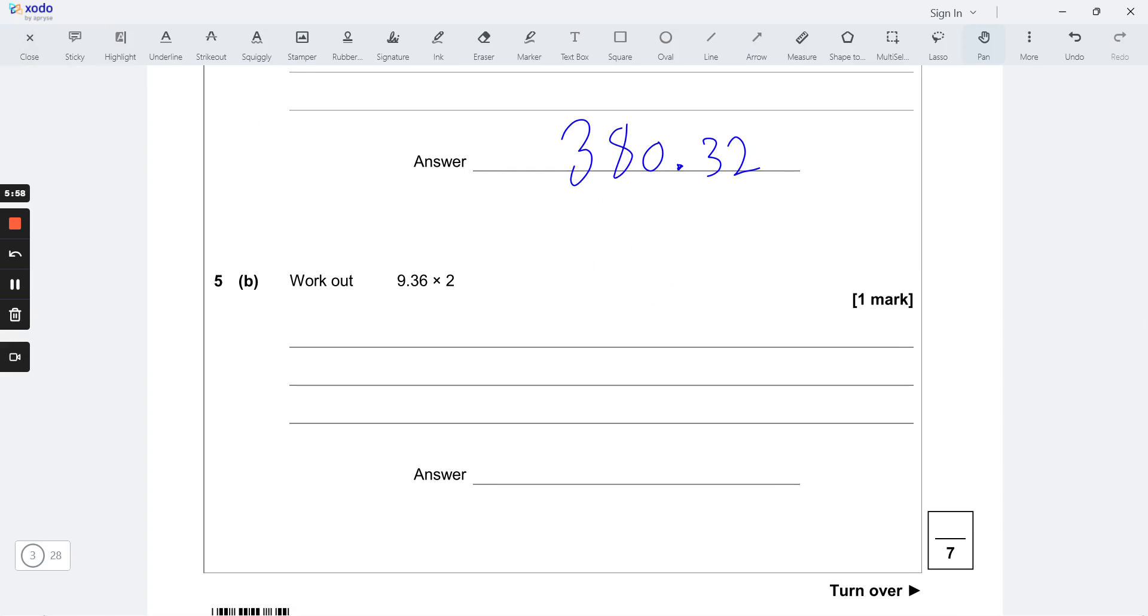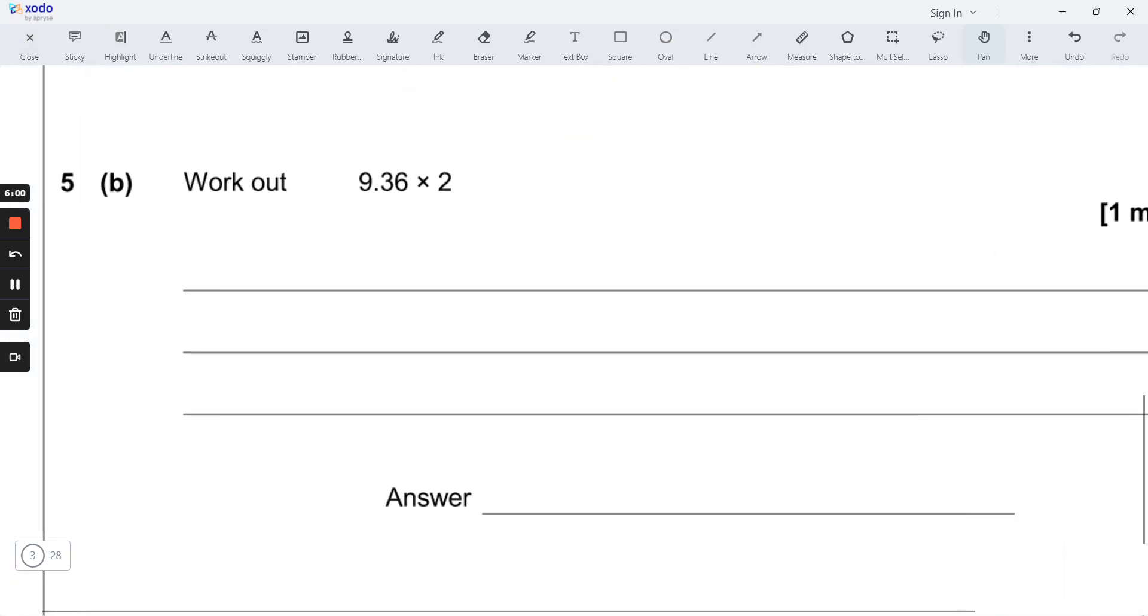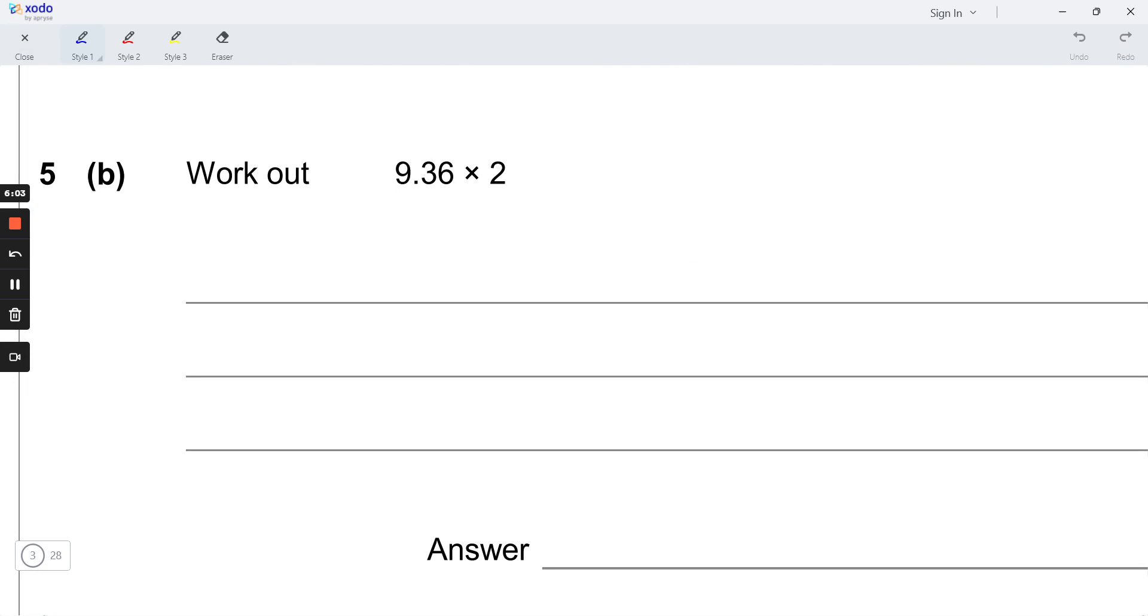Work out 9.36 times 2. We will multiply it normally using column multiplication. So 9.36 times 2: 2 times 6 is 12, carry the one. 2 times 3 is 6, plus 1 is 7. 2 times 9 is 18. We have two decimal places here on the right, so move it two places. The new place will be here, so the answer is 18.72.